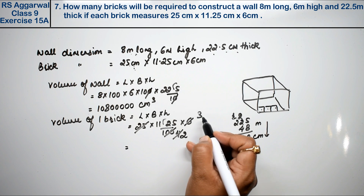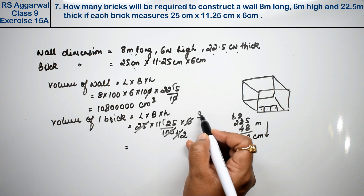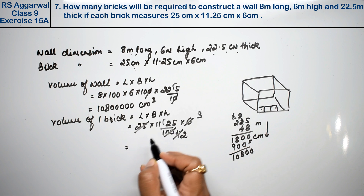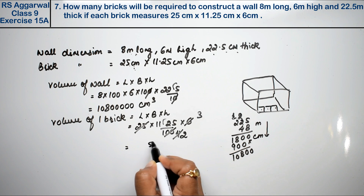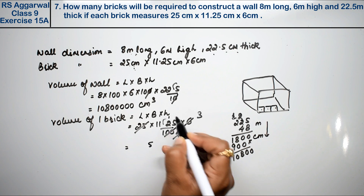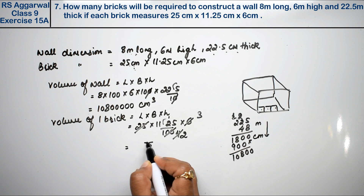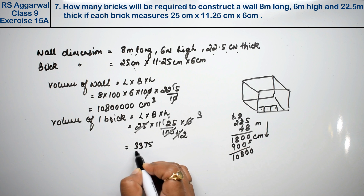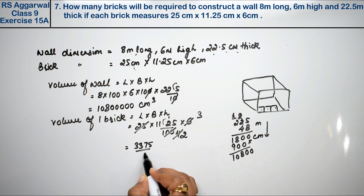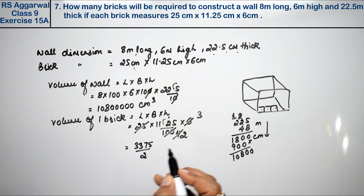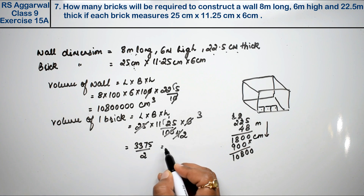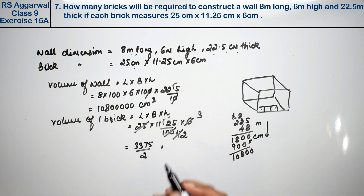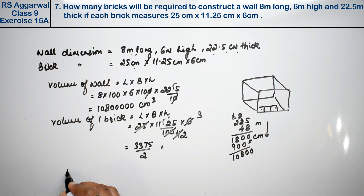After simplification: 3 into 5 is 15, carry 1; 3 into 2 is 6 and 7; 3 into 1 is 3 and 3; 1 is 3; upon 2. So the volume of one brick equals 3375 upon 2 cubic centimetres.